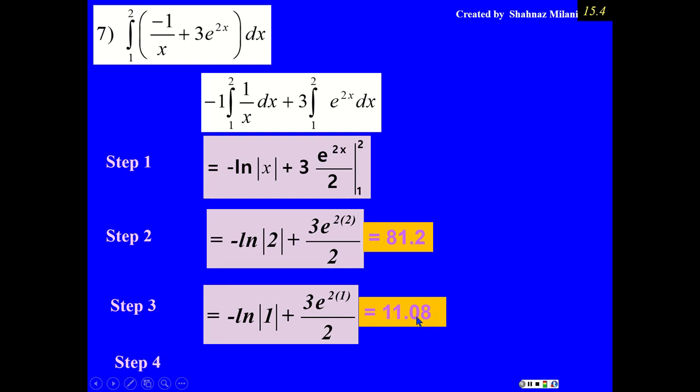Step number 4. The higher x value is 2. The answer is 81.2. Lower x value is 1. My answer is 11.08. Subtract from each other. And that is going to be my area, 70.42.